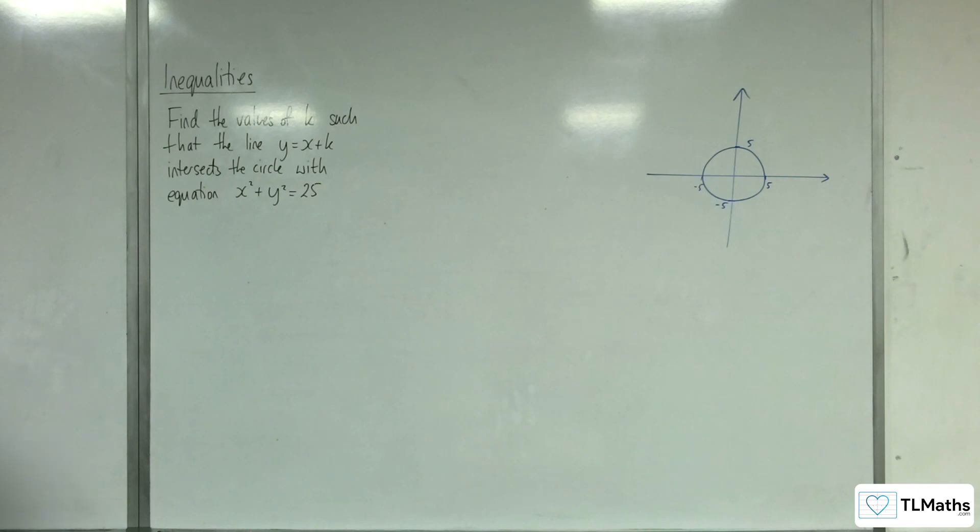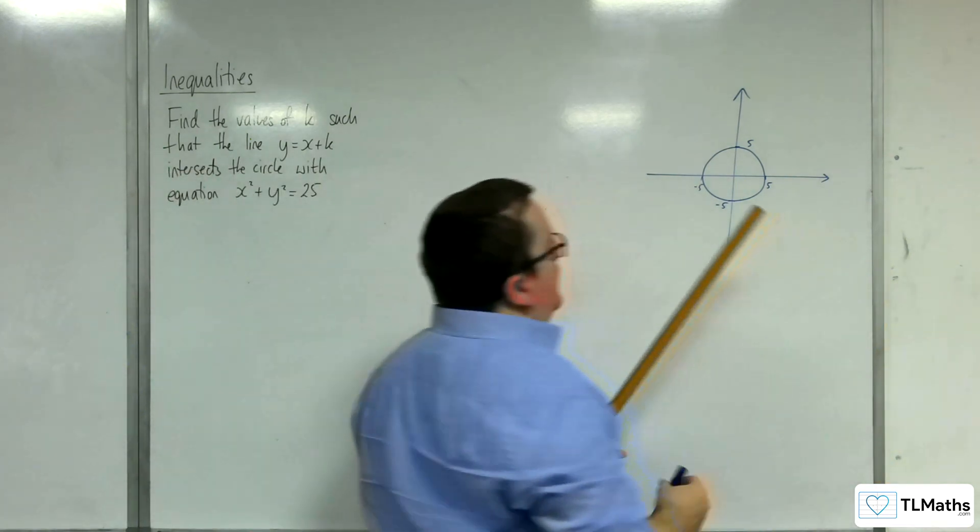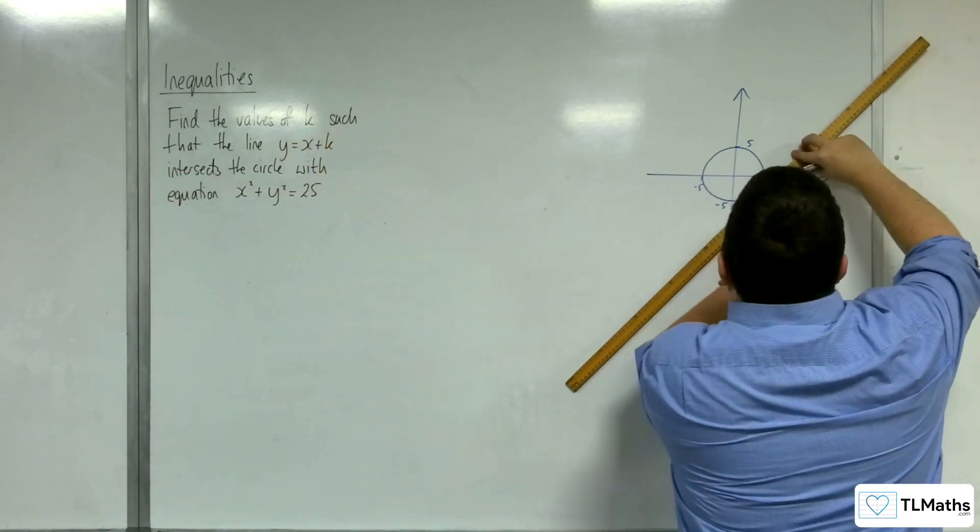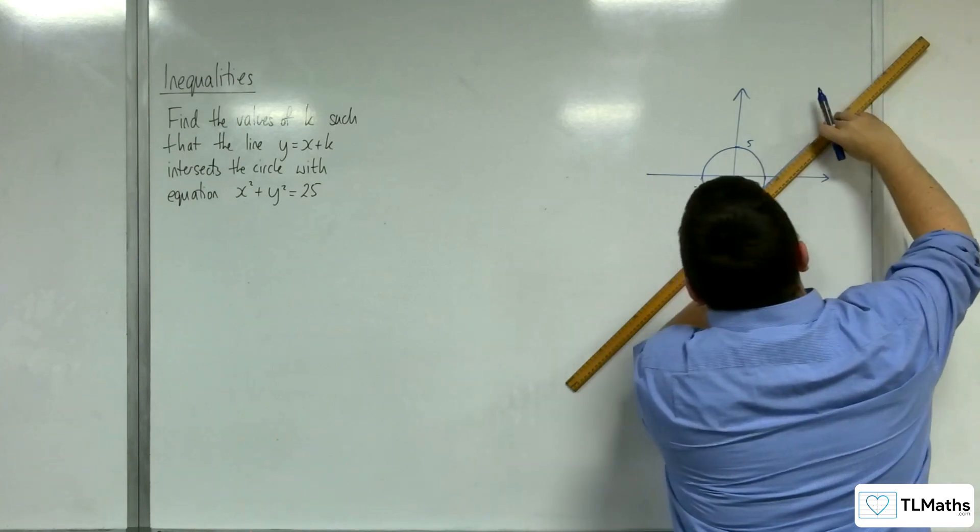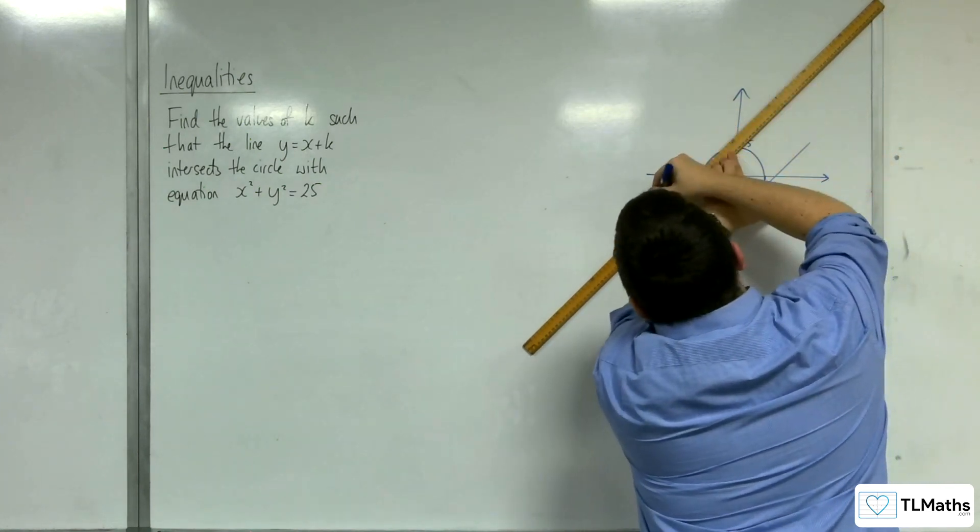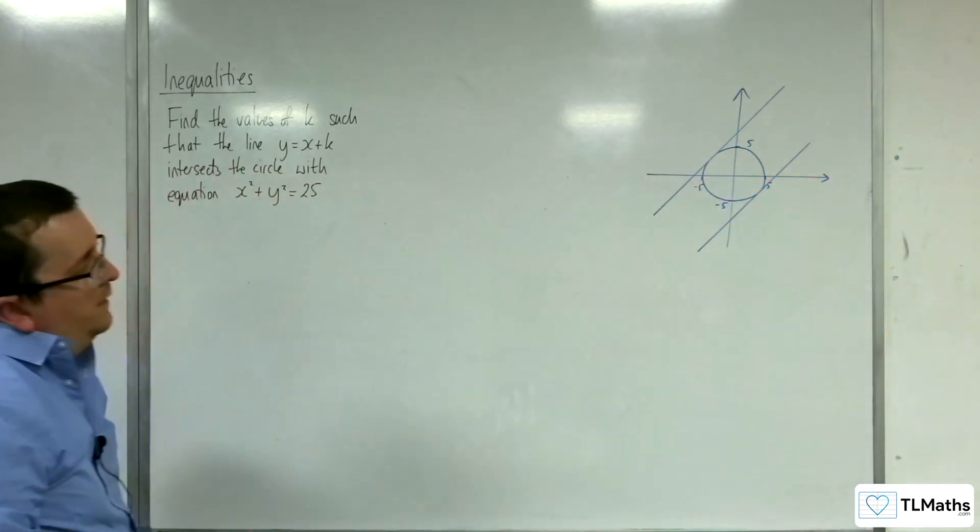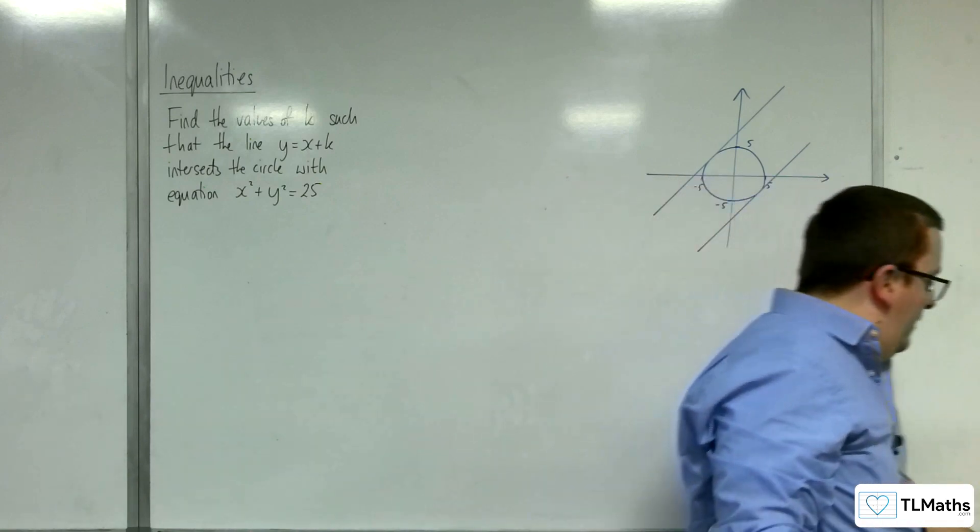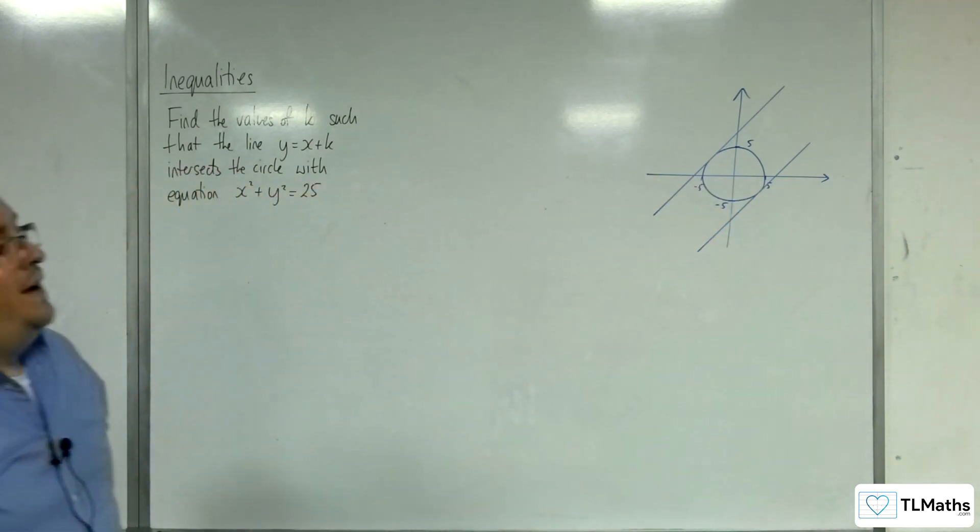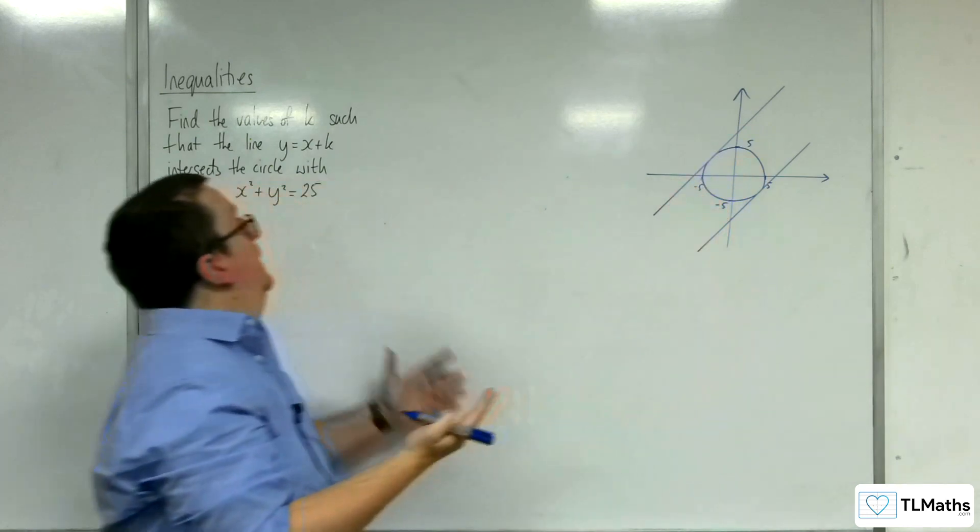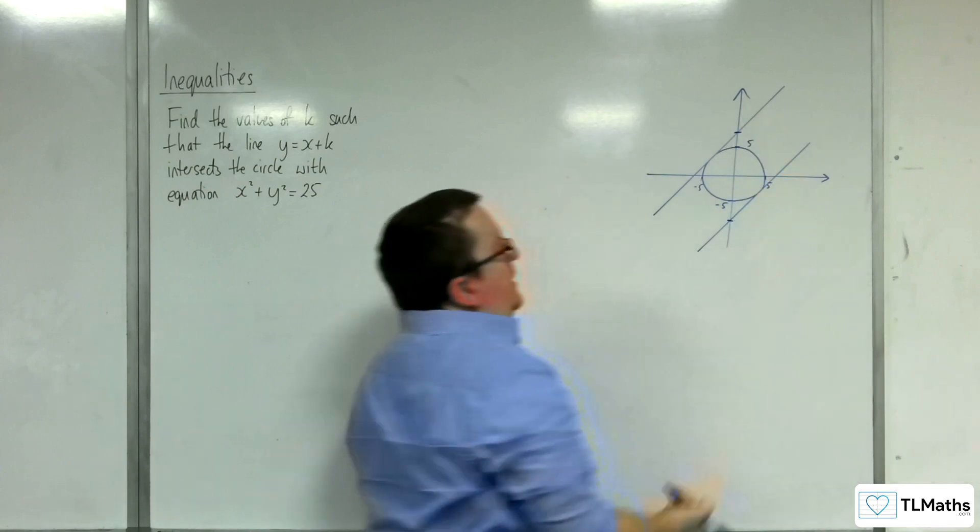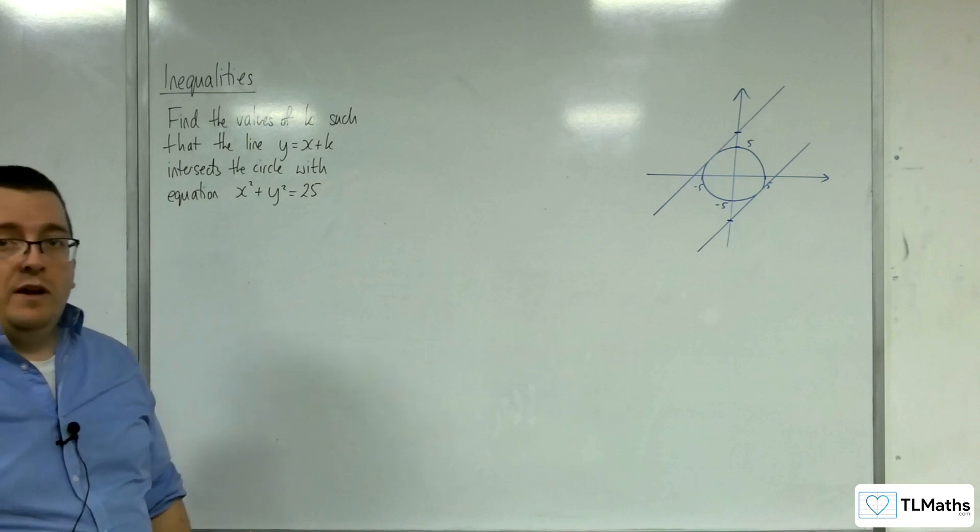So the line y equals x plus k is a line with gradient 1, and it's going to be something like this. Any line all the way through the circle until I hit the edge again. So both those lines are meant to be parallel and they are tangents to the circle. So I need to find the values of k which allow us to do that. Because plus k is the y-intercept, it's actually from that value there down to that value there. So I need to find out what those values are.